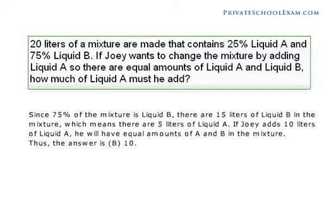20 liters of a mixture are made that contains 25% liquid A and 75% liquid B. If Joey wants to change the mixture by adding liquid A so there are equal amounts of liquid A and liquid B, how much of liquid A must he add? Since 75% of the mixture is liquid B, there are 15 liters of liquid B in the mixture, which means there are 5 liters of liquid A. If Joey adds 10 liters of liquid A, he will have equal amounts of A and B in the mixture. Thus, the answer is B, 10.